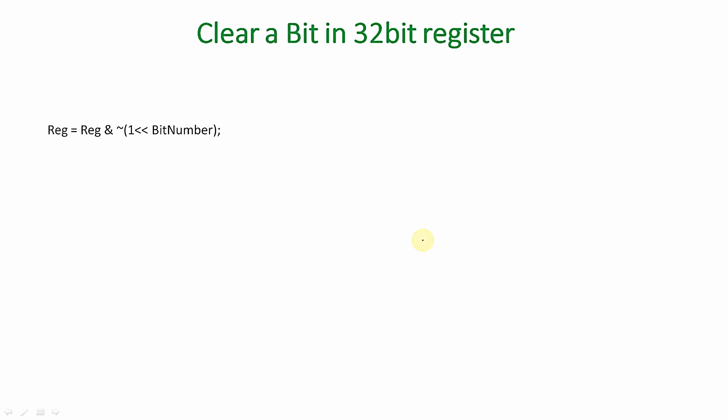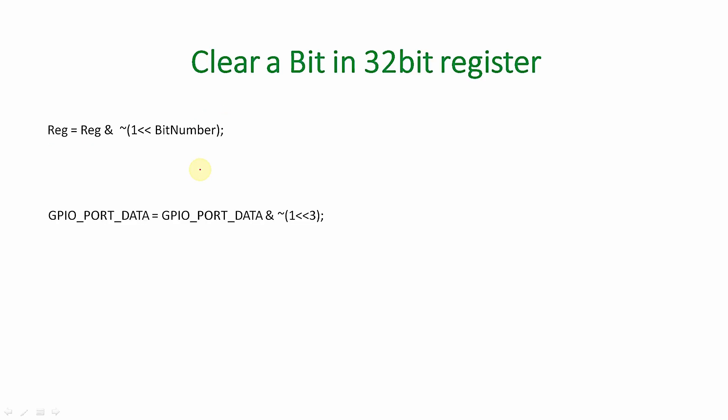Now let's look at the next technique: clearing a particular bit in a register without disturbing other bits. The sequence goes like: register = register & ~(1 << bit_number). The bit number is the bit you want to clear, irrespective of the initial value it holds. Whether the bit is 0 or 1, you want to clear it while retaining all other bit values. Let's take the same example — clearing bit number three in the GPIO port data register.